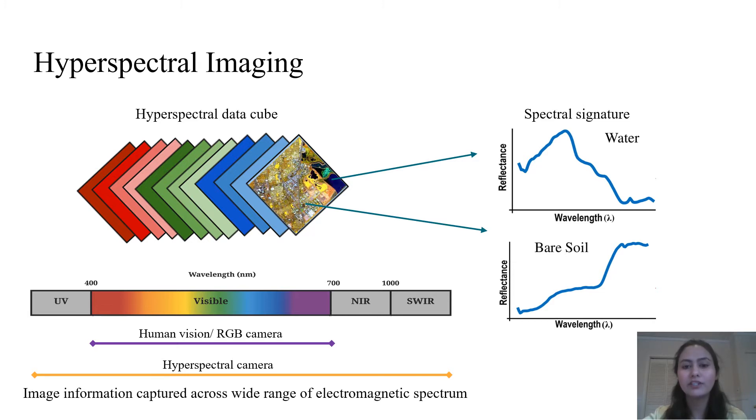The complete spectral information can only be captured using expensive hyperspectral cameras having bulky and complex hardware. The captured images contain rich information even beyond human vision. Spectral information captured in different wavelength bands can be used to produce a spectral signature which can be used to identify different materials in the scene.